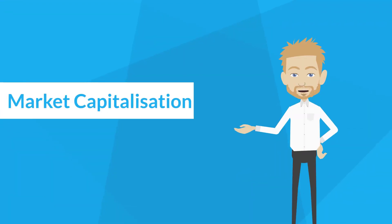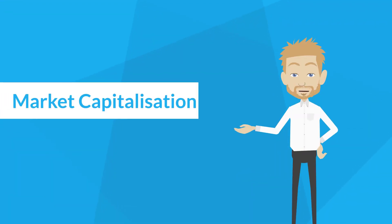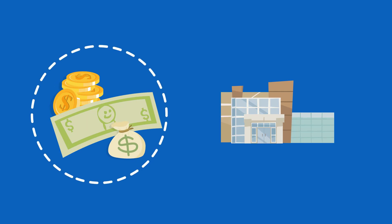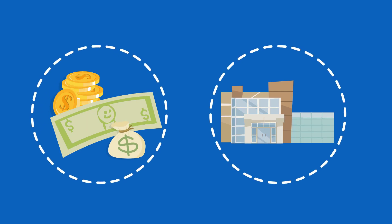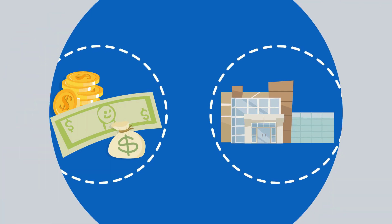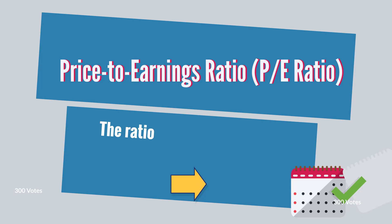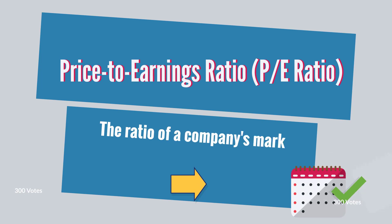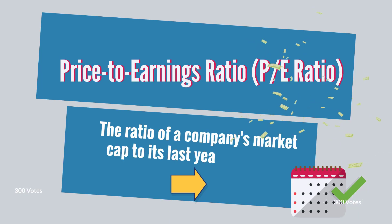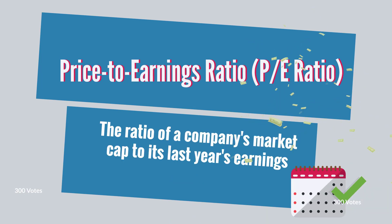Market capitalization: the total value of a company, calculated by multiplying the number of shares by the price of each share. Price to earnings ratio, or PE ratio: the ratio of a company's market cap to its last year's earnings.